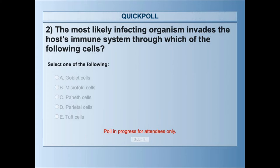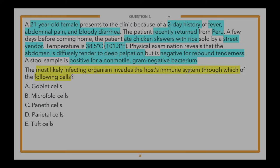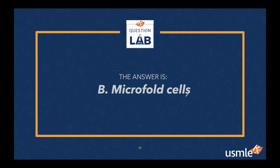It was close — 31% picked Paneth cells and 28% picked microfold cells. The correct answer is B, microfold cells, and 28% got it right. Definitely a tough question — let me hand it off to explain why.